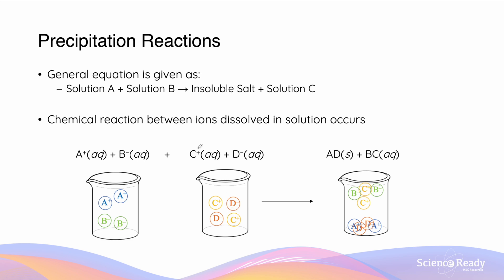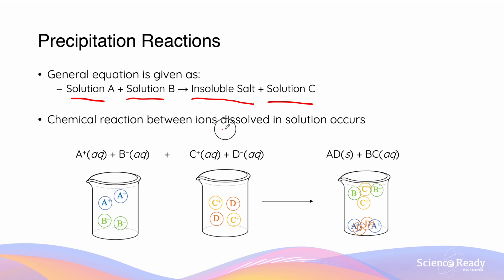A precipitation reaction has the general equation: solution A plus solution B forms an insoluble salt plus solution C. These precipitation reactions occur when the ions of the dissolved salts react with one another to form the insoluble salt.